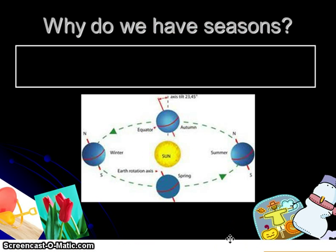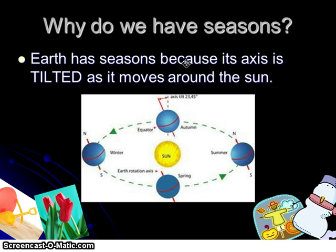As we revolve around the sun, something odd happens here on earth. We know that our temperatures change. In the northern hemisphere, as we move around the sun throughout the year, we will have increases or decreases in temperature. But why is that happening? The reason we have seasons is because the earth is tilted on its axis.